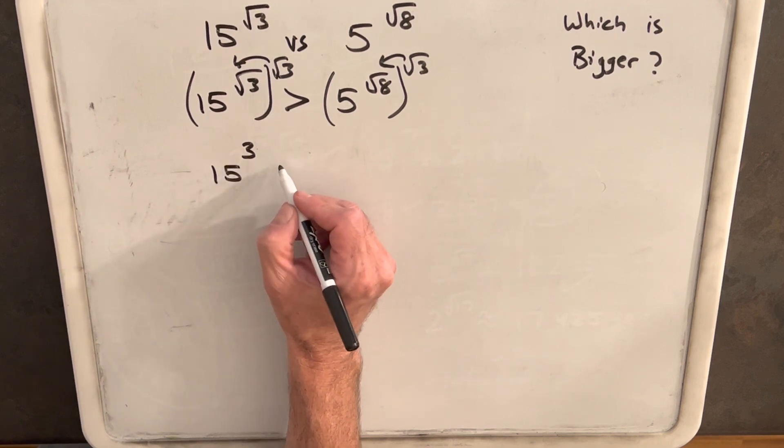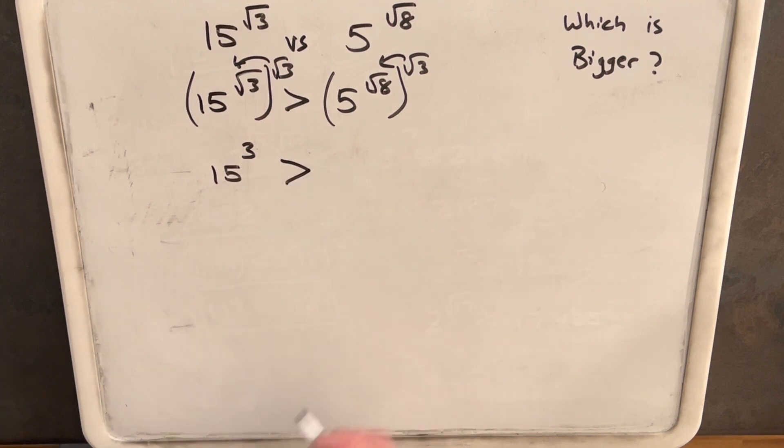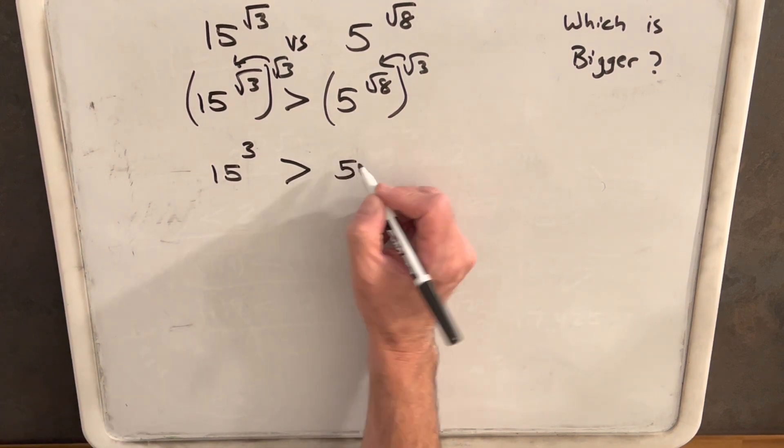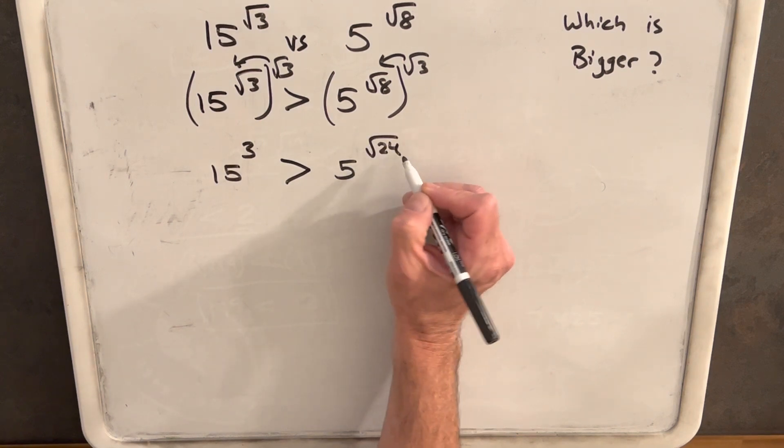So we have 15 to the third, 15 cubed on the left. And this right expression, multiplying square root of 8 times square root of 3, is going to be 5 to the square root of 24.